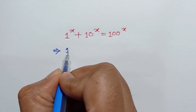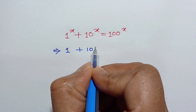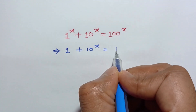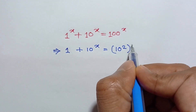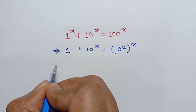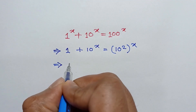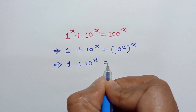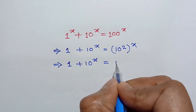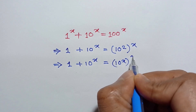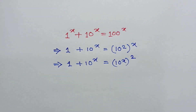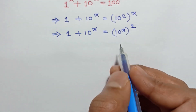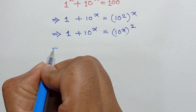1 plus 10 to the power x is equal to 100, which can be written as 10 squared to the power x. So 1 plus 10 to the power x is equal to 10 to the power x whole square.